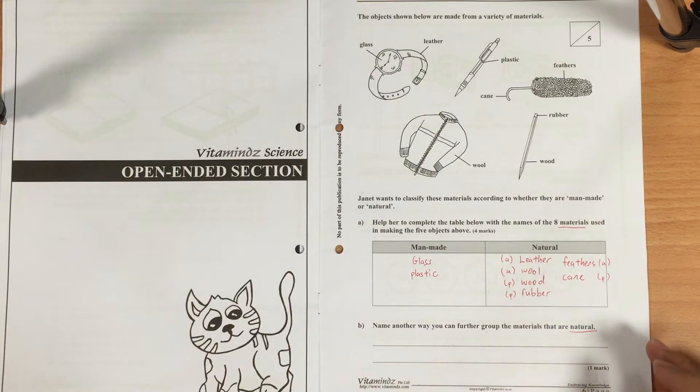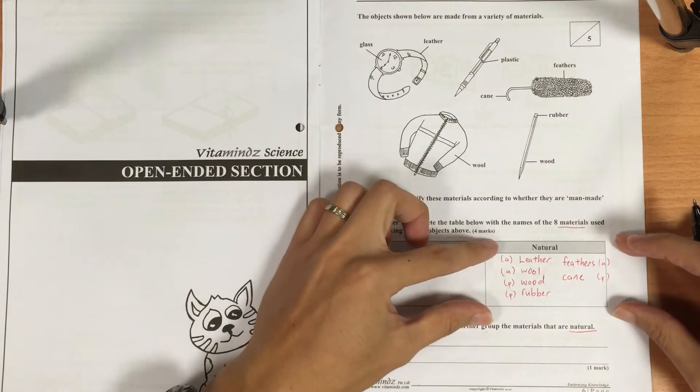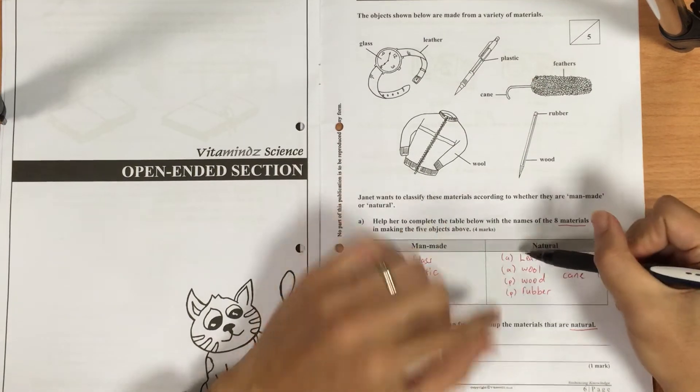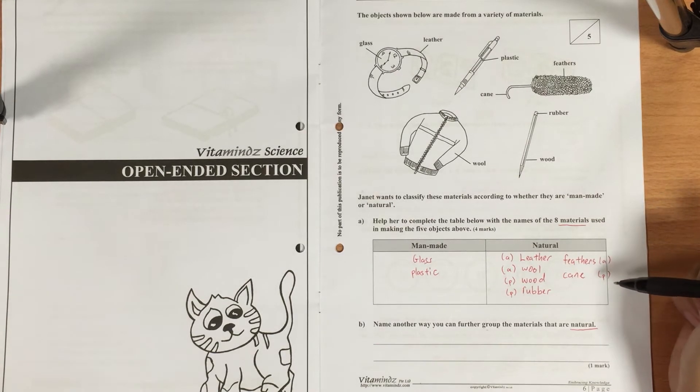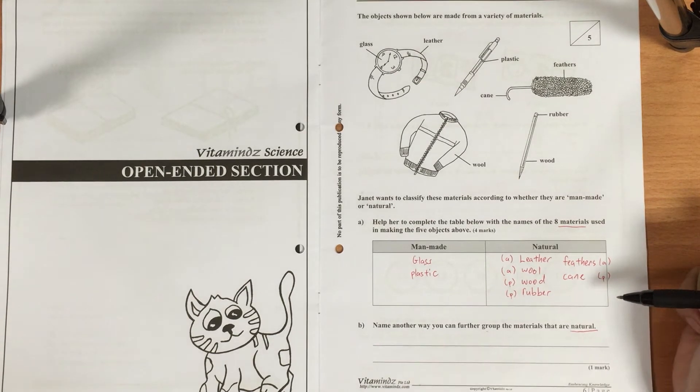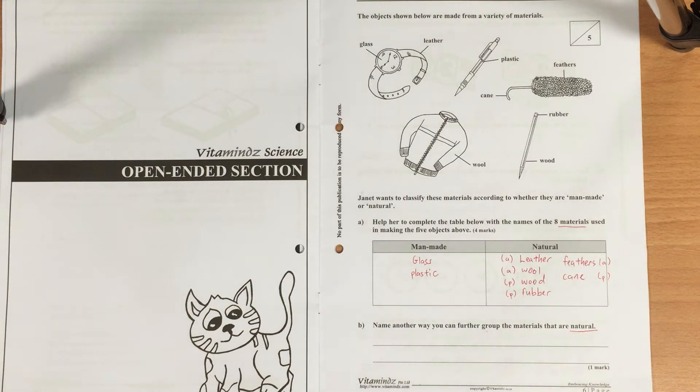But some of you may not be able to answer the second part which asked us to name another way that we can further group the materials that are natural. Looking at the natural, you realize that as I went through in class, I asked you to write A and P to name those things that come from plants as well as come from animals. There's a very important thing about natural objects - we can classify them from where they come from, and they'll be from plants or they're from animals.